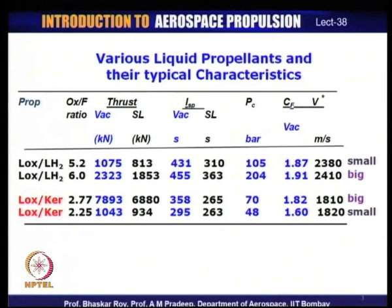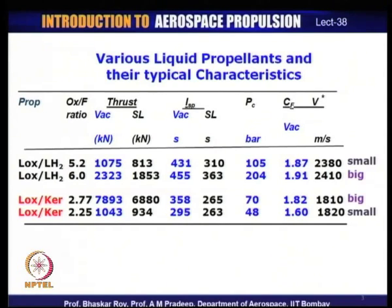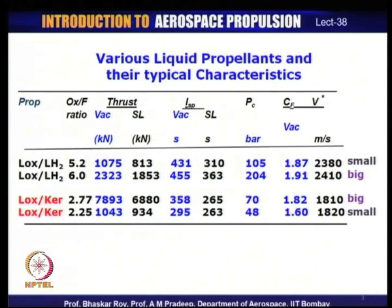Rockets are often characterized by a number of parameters. We have talked about thrust, which is a total measure of performance, but the characteristic parameters are specific impulse ISP, specific thrust coefficient Cf, and characteristic velocity V-star in meters per second. These are characteristic numbers not necessarily connected to the size of the rocket.